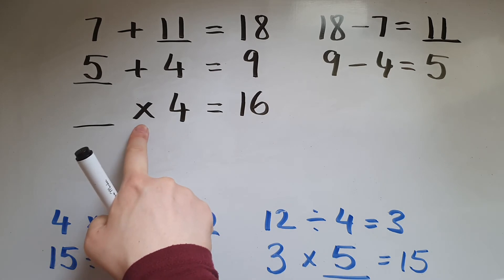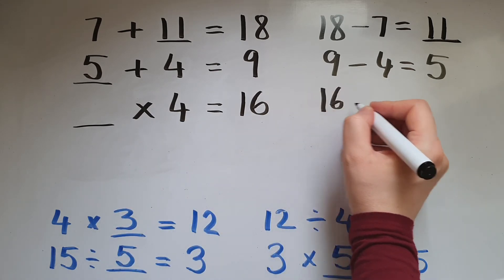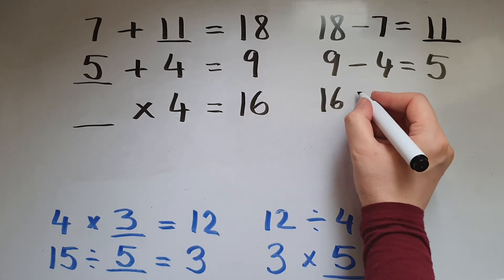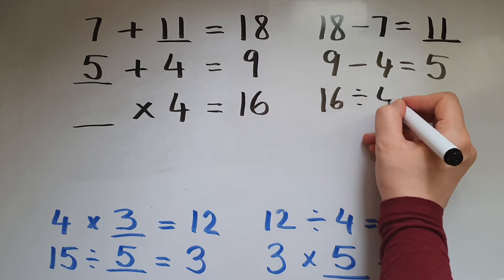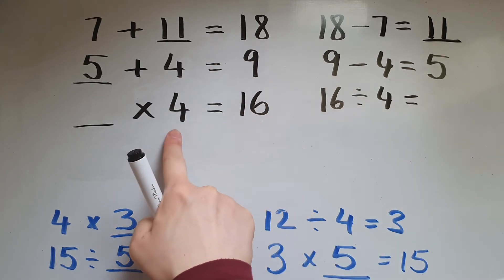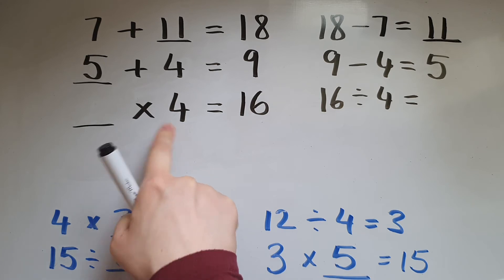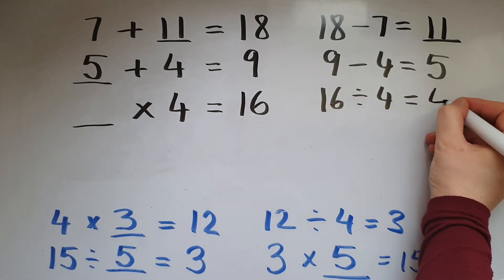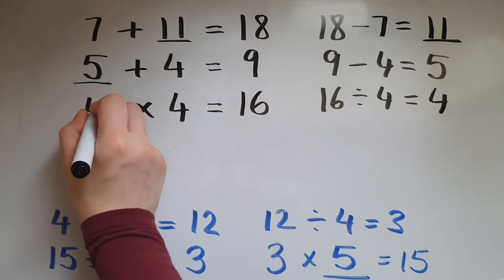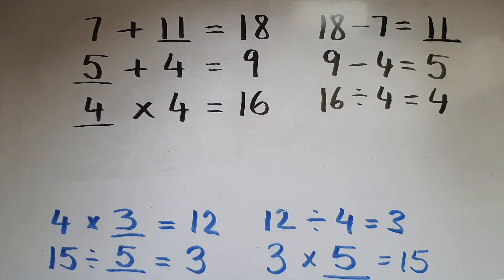16 divide, the inverse of multiplication. So 16 divided by 4 gives us 4, which is the same as saying 4 times 4 equals 16.